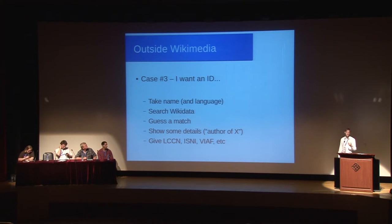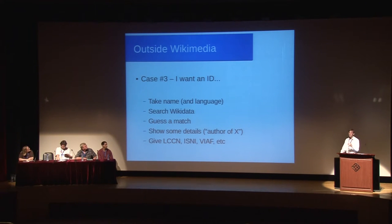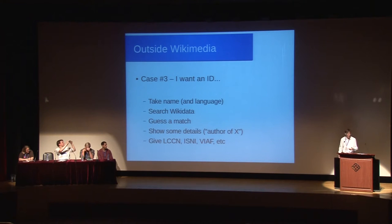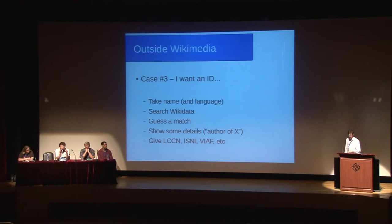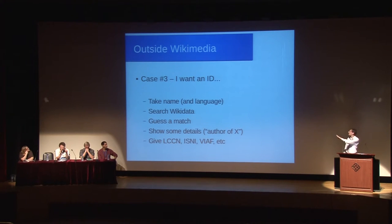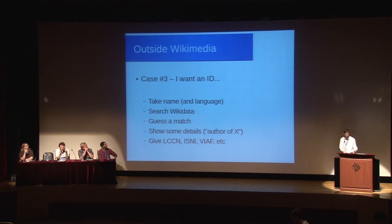Thirdly, we could use Wikidata to bring these codes to people. If you're writing a system that relies on these codes, you need a way of looking them up without going to 15 different systems. Because we're aggregating all this information into Wikidata, you can feed it with a name or some information and ask for a code. It will give you possible examples with details attached — giving you a sense of which is probably the right person — and from there it can be embedded in your system. These are all hypothetical examples, but hopefully over the next few years people will be able to build these tools with the linked data we've built inside Wikidata using the authority controls.